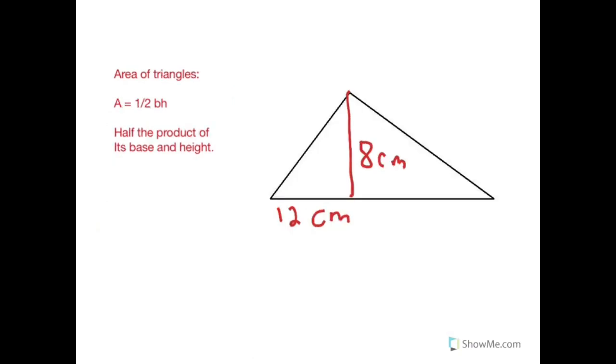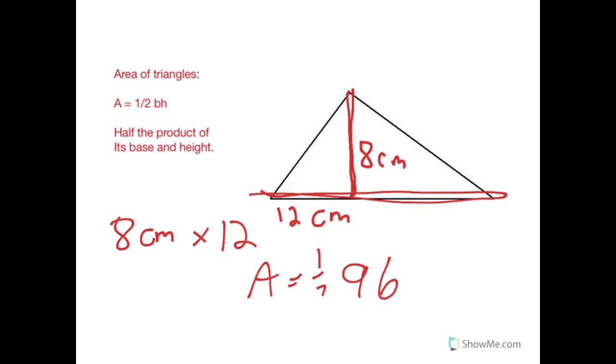Okay, moving on to the area of the triangle. The area of the triangle is one-half base times height. So half the product of the base and the height. So here, we have a triangle that has a height of eight centimeters. The base is twelve centimeters. So first, we're going to multiply eight times twelve, and we're going to end up with ninety-six. And I know that my area is one-half of ninety-six. Divide that out. We're looking at forty-eight centimeters squared.